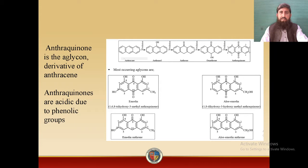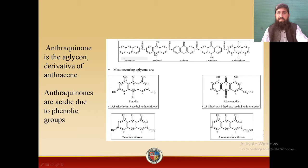The production of anthraquinone follows these steps. Anthracene is oxidized and converted into Anthranol, then oxidation of Anthranol converts it to Anthrone, oxidation of Anthrone converts it into Oxanthrone, and when Oxanthrone is oxidized it is converted into Anthraquinone. Anthraquinone is the aglycone derivative of Anthracene. Anthraquinones are acidic due to the presence of phenolic groups.